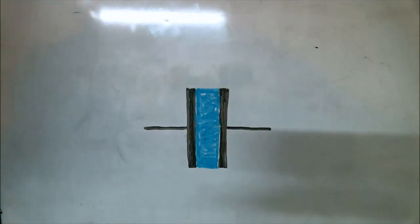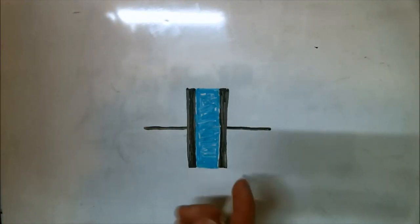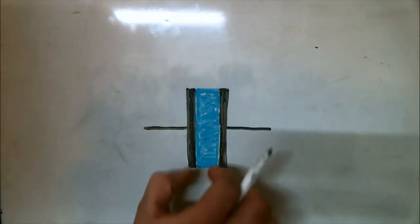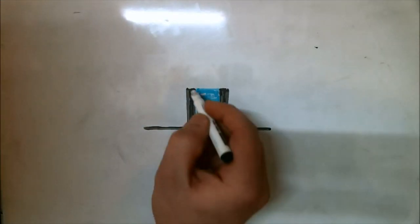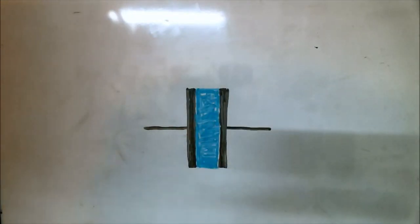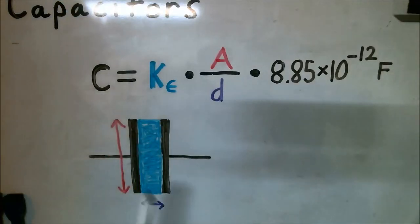The first one being the dielectric material. The second being the distance between the plates or the thickness of the dielectric material. And thirdly, is the area of the conductive plates. And here is the formula for calculating the capacitance of a given capacitor.